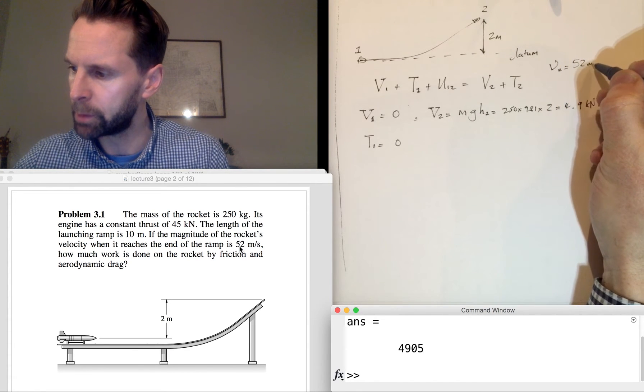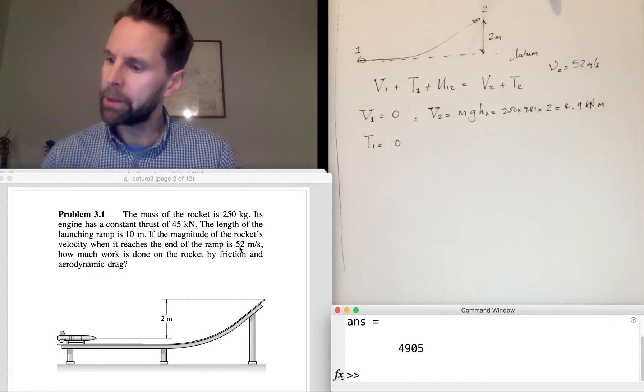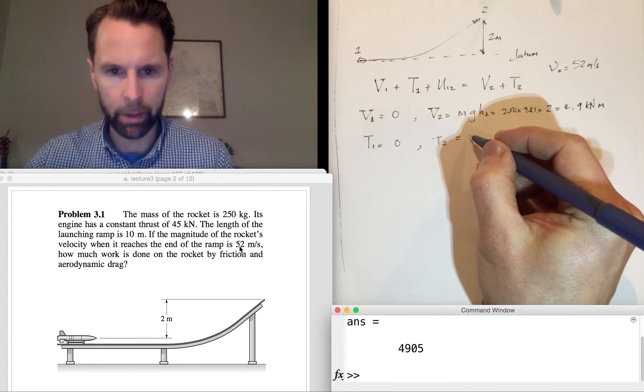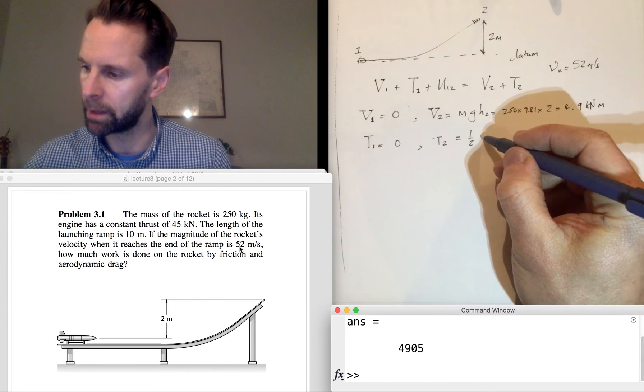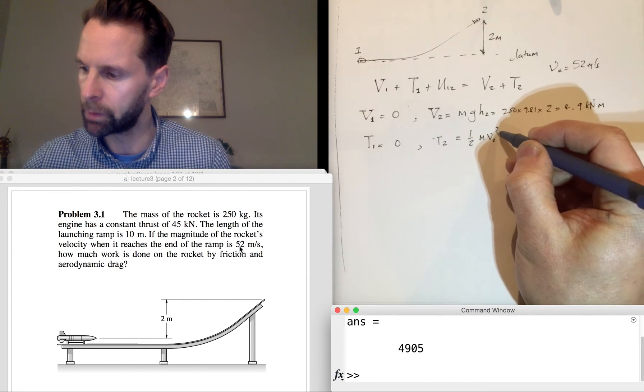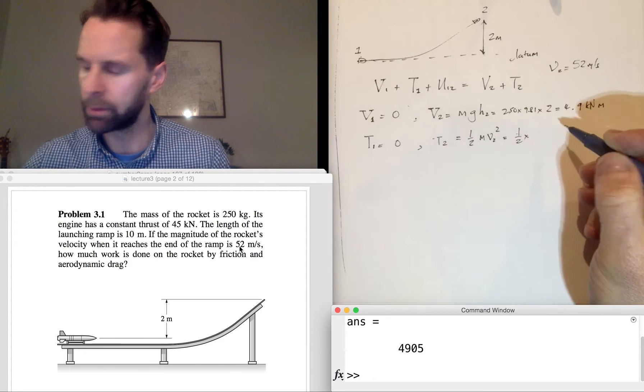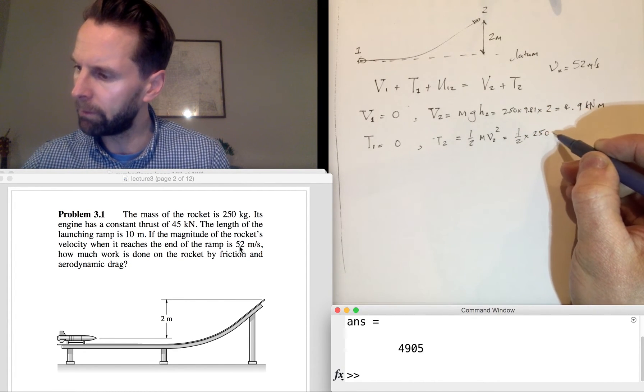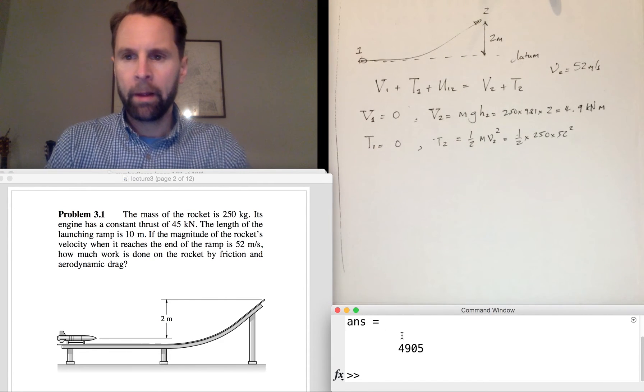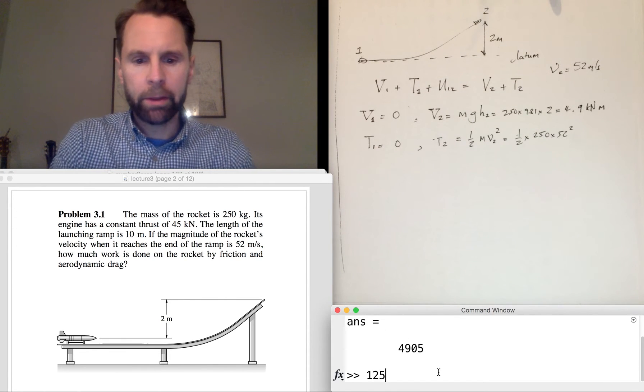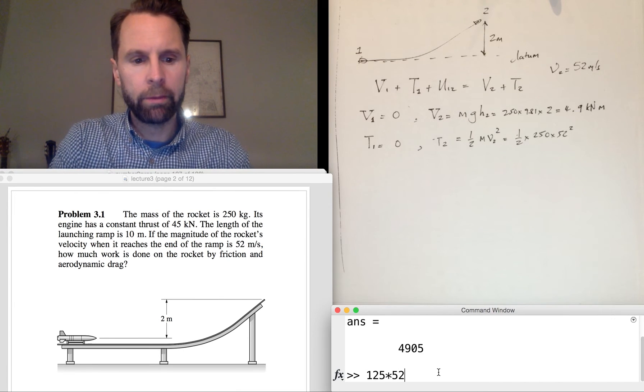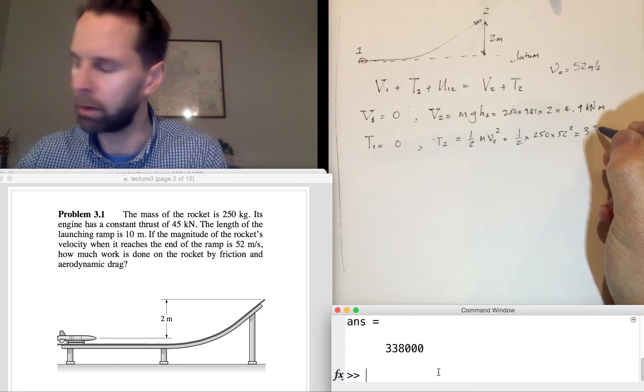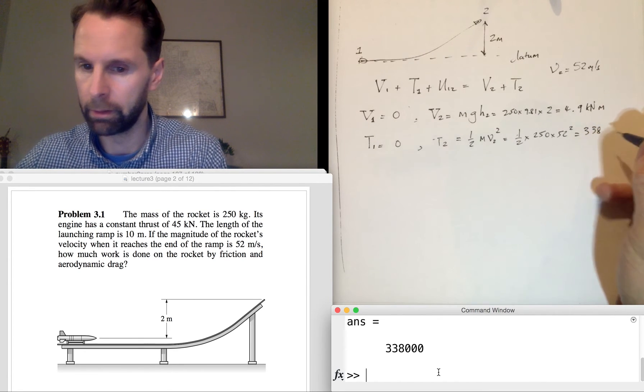So let's write down that V2 equals 52 meters per second. So we can work out what the kinetic energy is when it leaves the ramp, because the expression for kinetic energy is half mv2 squared equals half times—what's the mass again?—250 times 52 squared. So 250 divided by 2 is 125 times 52 squared, that gives us a much larger energy than potential energy.